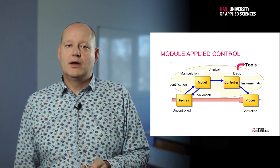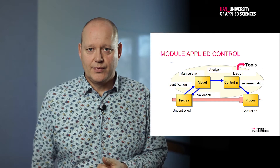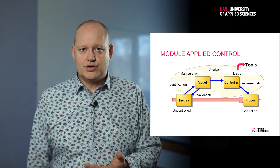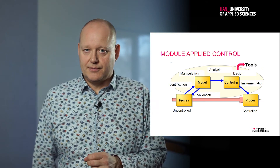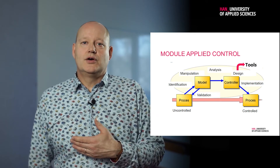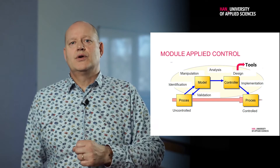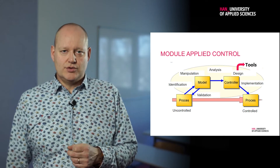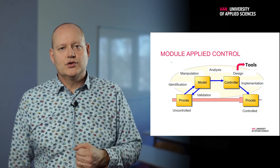First we describe this system with mathematical relationships and we build a model. This model could be white box or black box. The next step is to simulate this model and analyze its behavior. Then you design an appropriate controller to control your process on a chosen variable. After you have designed a good controller, you implement it in the process. In this way you come from an uncontrolled process to a controlled process.